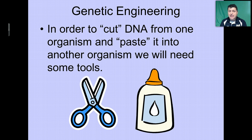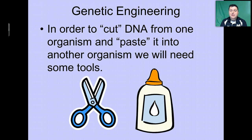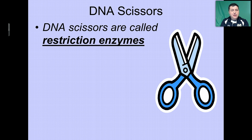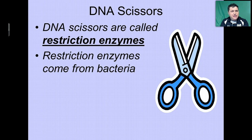Now, in order to do genetic engineering, we need certain tools. If we're going to cut and paste DNA from one source into another, we need what is tantamount to molecular scissors and molecular glue. Our DNA scissors are called restriction enzymes. The restriction enzymes were isolated from bacteria.